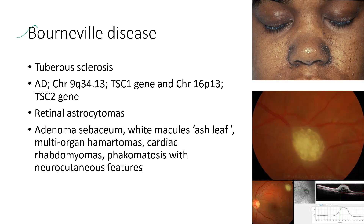Next is Bourneville disease, also known as tuberous sclerosis. It is an autosomal dominant condition. The ocular features include retinal astrocytomas, shown in these images. Systemic features include adenoma sebaceum, white macules called ash-leaf spots, multi-organ hamartomas, cardiac rhabdomyomas, and it is a phacomatosis with neurocutaneous features.